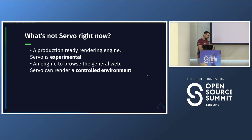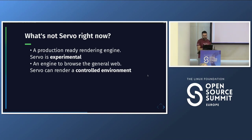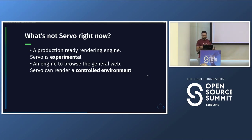What's not Servo right now? It's not a production-ready rendering engine — it's an experimental project, and it has been experimental throughout its history. That has positive aspects since you can experiment with new web standards, but it's not ready for production. It's also not an engine that can browse the general web — that would need a huge investment and a lot of work. However, Servo can render a controlled environment: if you have components using HTML and CSS features that work on Servo, you can probably create an application that uses Servo underneath.